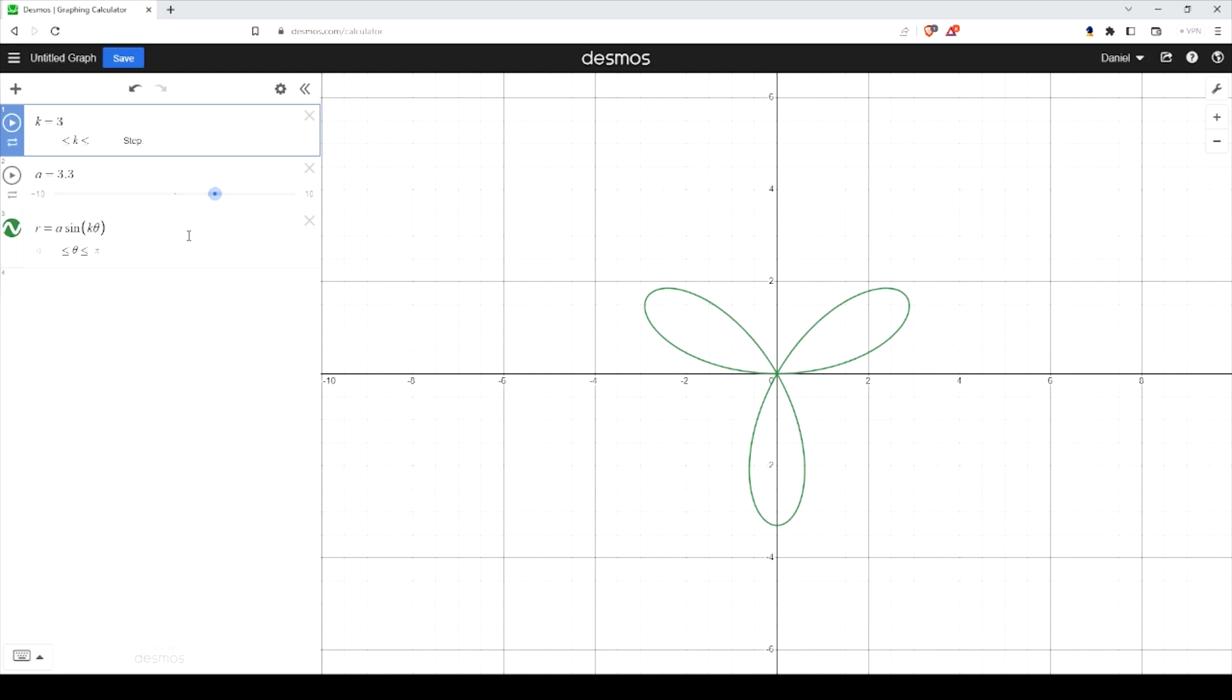So what I begin to find is that if we want to start manipulating this, such as translating it so that we can add more of these around the graph, I like to convert this into rectangular form.